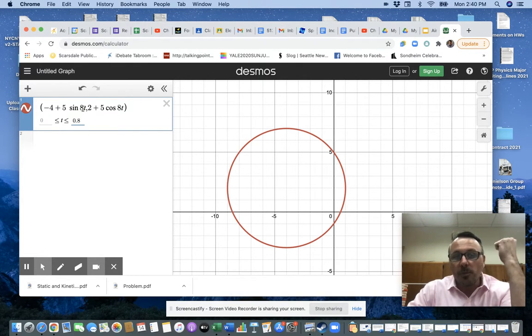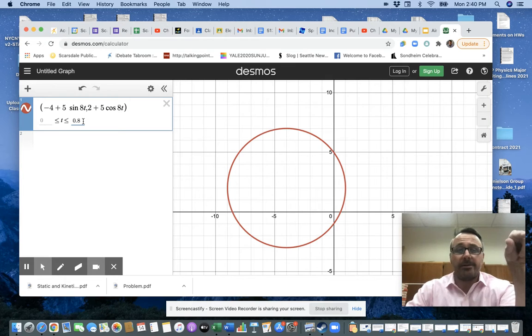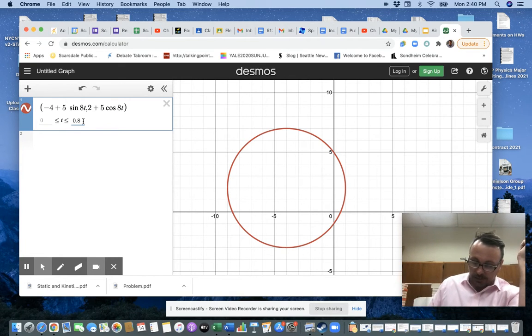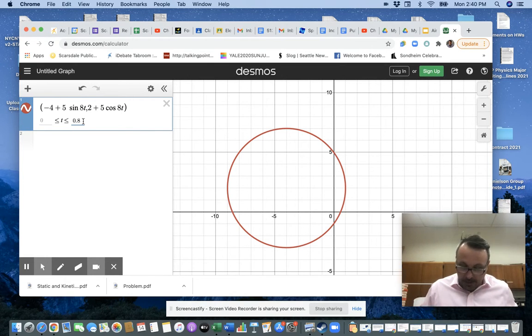And so when does it go through one cycle? Well, when 8t is equal to 2 pi, so if 8t is equal to 2 pi, let's see, 8t is equal to 2 pi, that means at about pi over 4 is when I get to one full rotation, and pi over 4 is 0.7853.